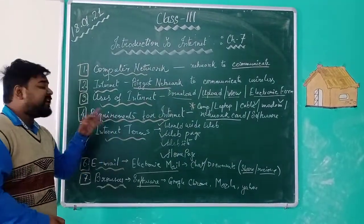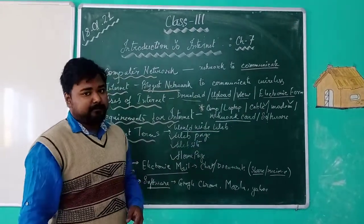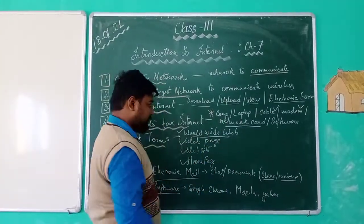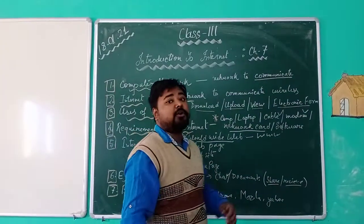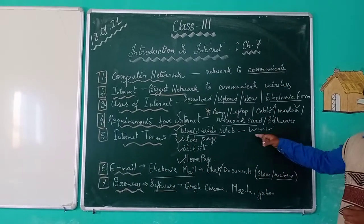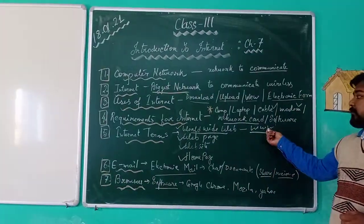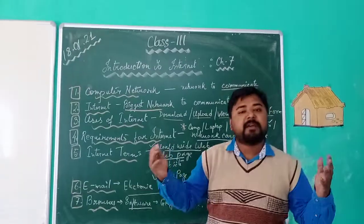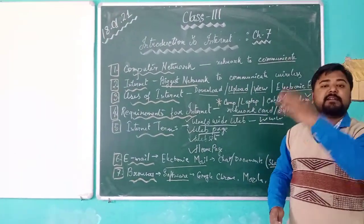There are some important internet terms. First is the World Wide Web. World Wide Web means a worldwide network — it is the internet spread across the whole world like a web. This is the internet. A web page is like a page — just as a copy or blackboard displays content, a web page displays content on your screen.